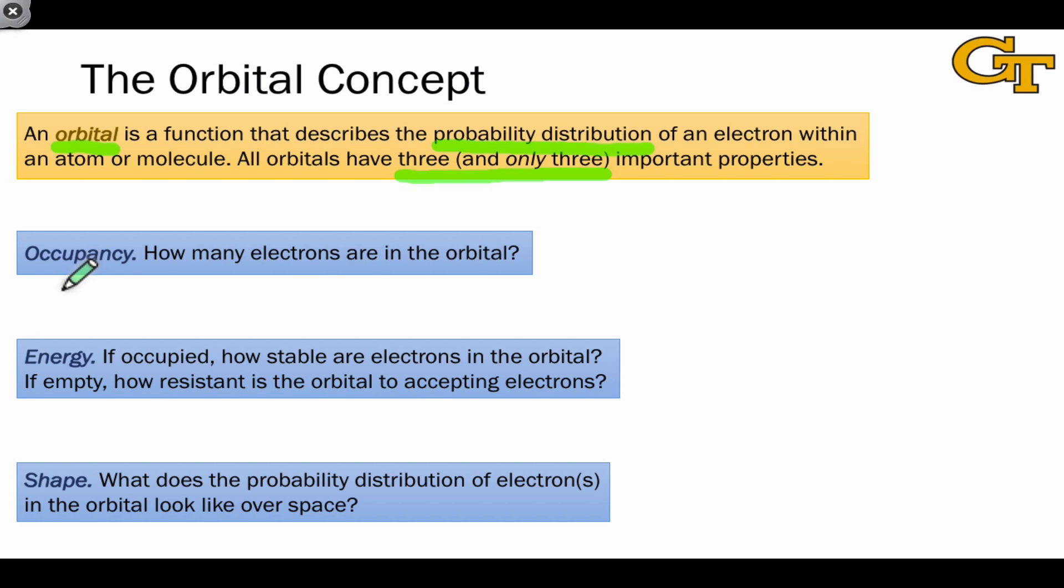The first is occupancy: how many electrons are located in the orbital? On an orbital energy diagram, which shows the energies of orbitals and highlights these properties, we identify occupancy as the number of electrons in an orbital represented as a horizontal line. For example, this hypothetical orbital I'm drawing here has an occupancy of two, with one spin-up and one spin-down electron. We also see orbitals with an occupancy of one that contain only one electron, and so-called empty orbitals with an occupancy of zero.